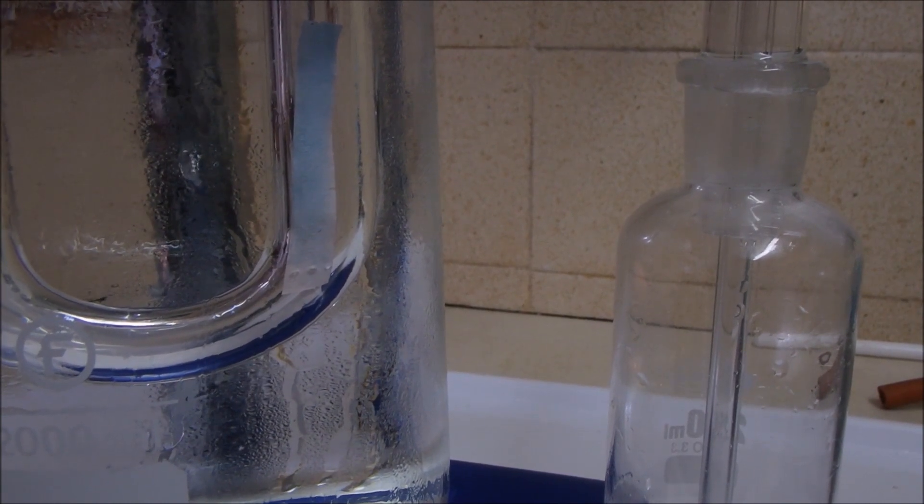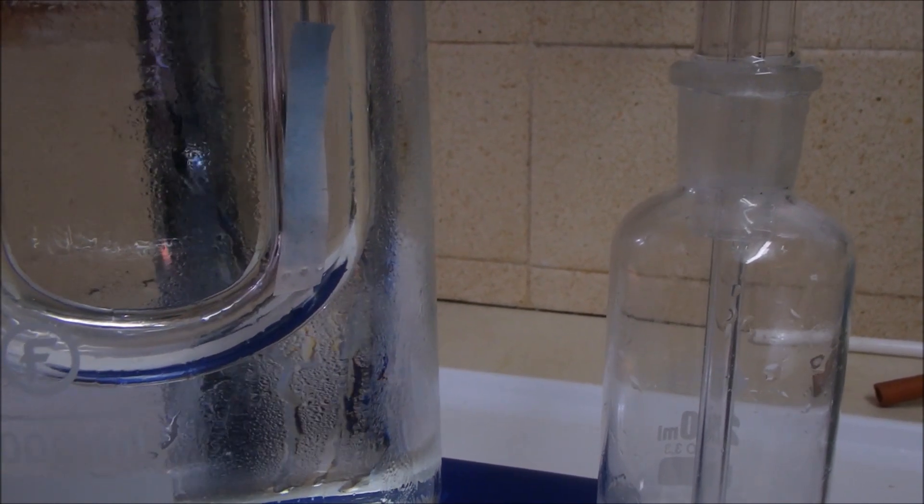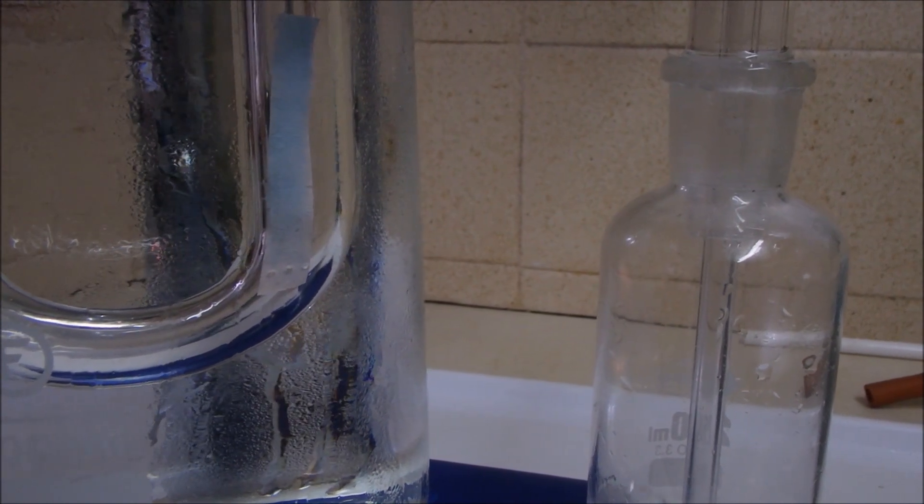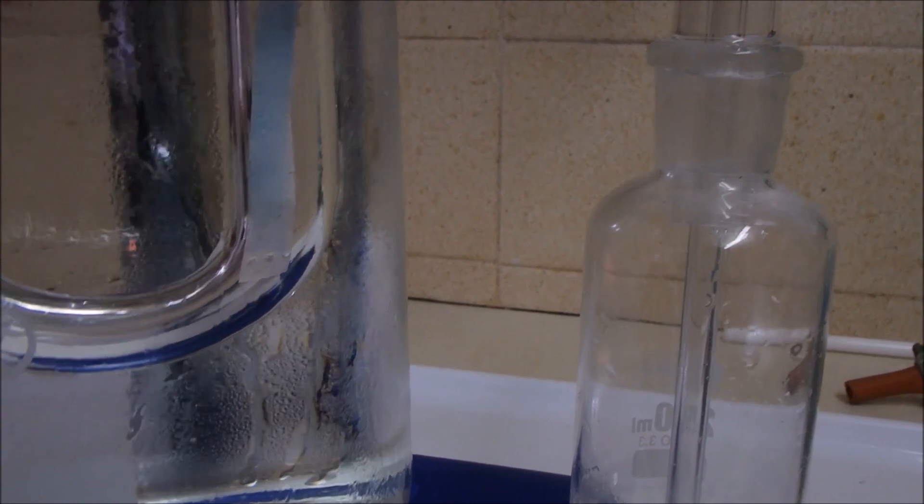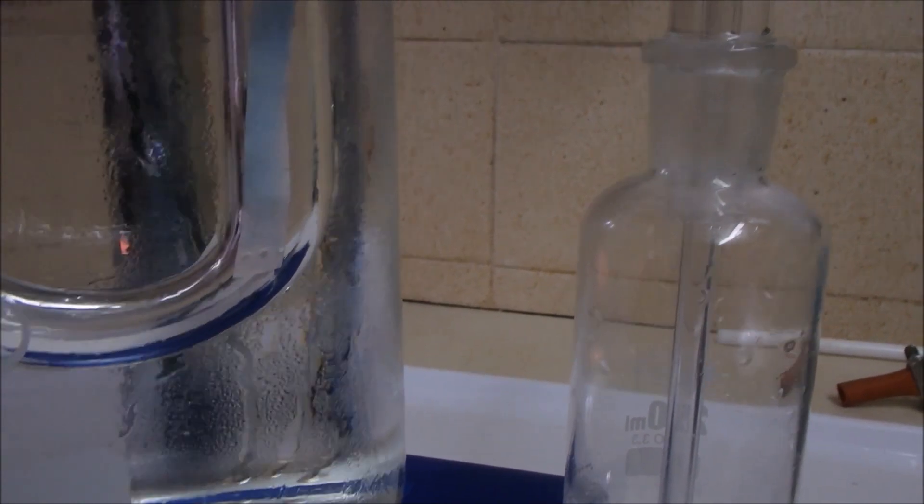Carbon dioxide. And? Oxygen. No, not oxygen. What are we testing for? What's the blue cobalt chloride paper testing for? Water. Water. So we've got water and carbon dioxide.